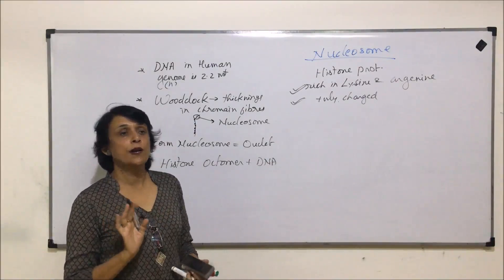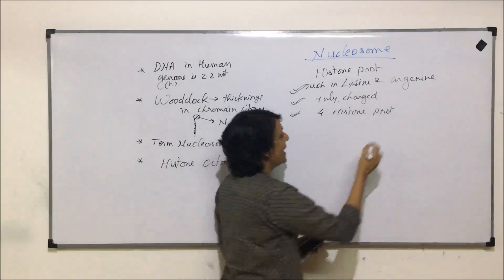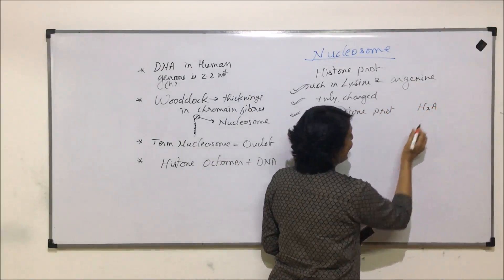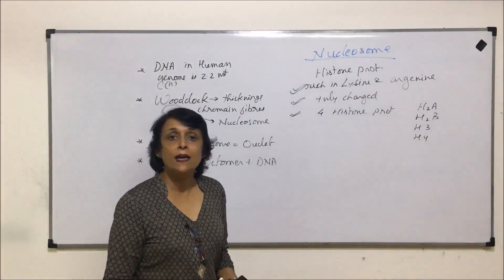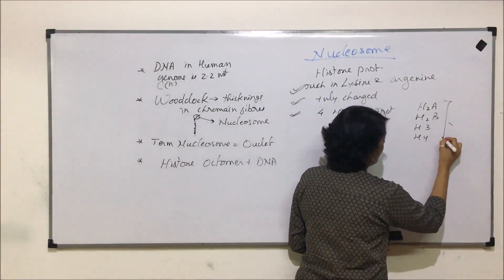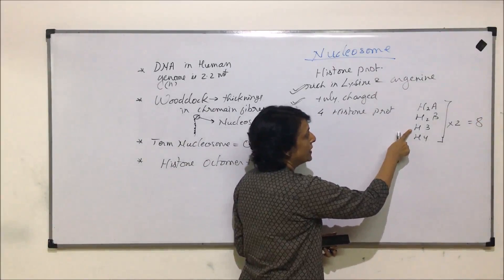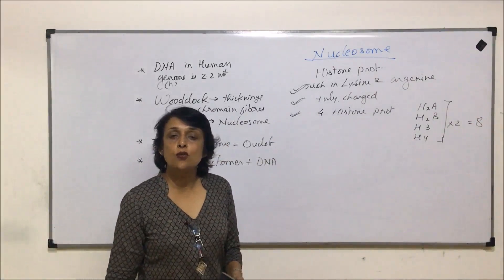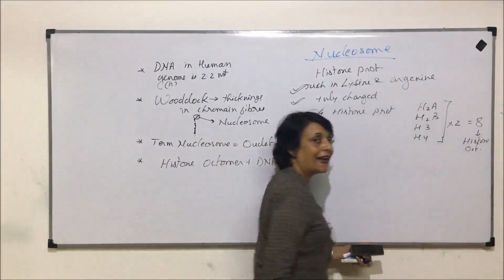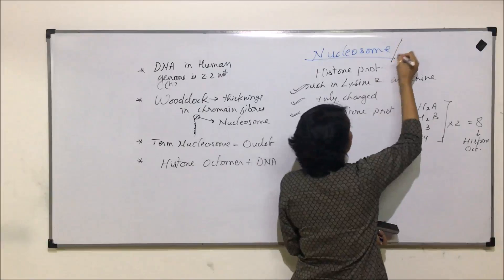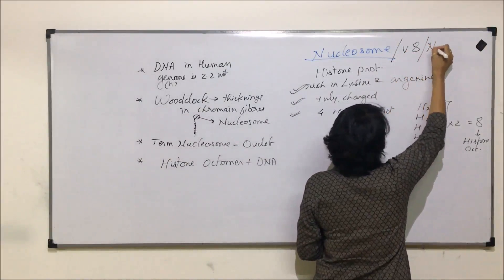There are four types of histone proteins: H2A, H2B, H3, and H4, and all of them are 2 in number. So if all of them are 2 each, we get 8 histones total — 2 of each of the 4 types. That is why it is known as the histone octamer. Nucleosomes are also sometimes referred to as nu bodies, but the most common term is nucleosome.